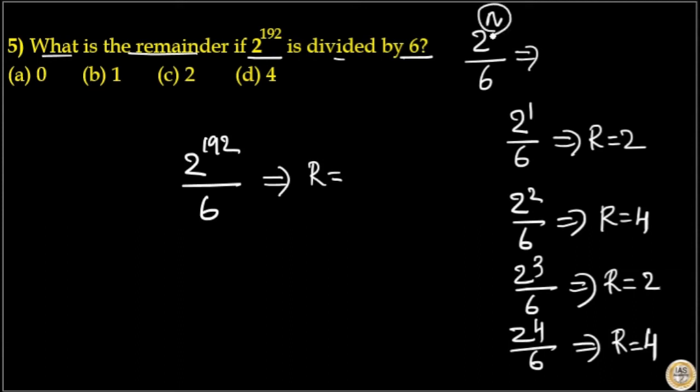For any power n, you will get remainder 2 and 4 for 2 raised to n by 6.